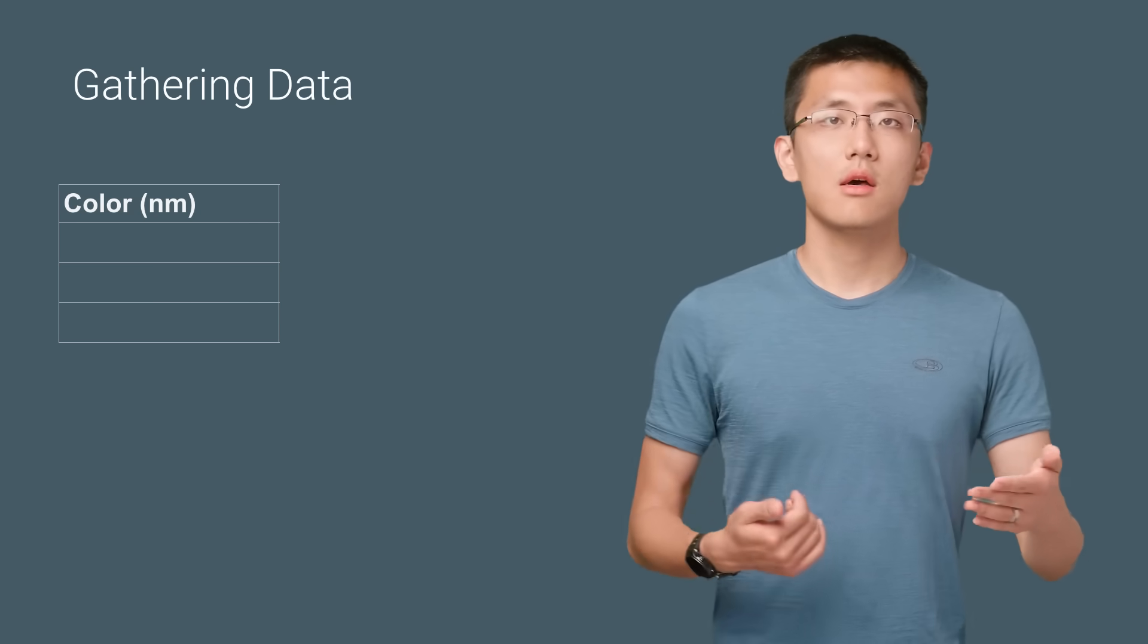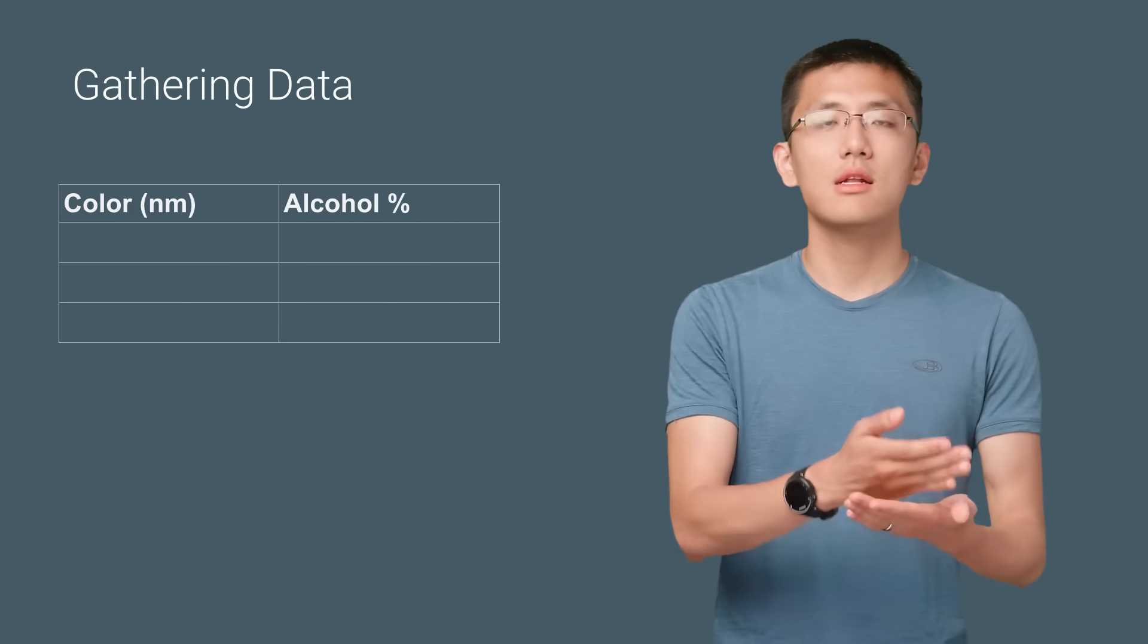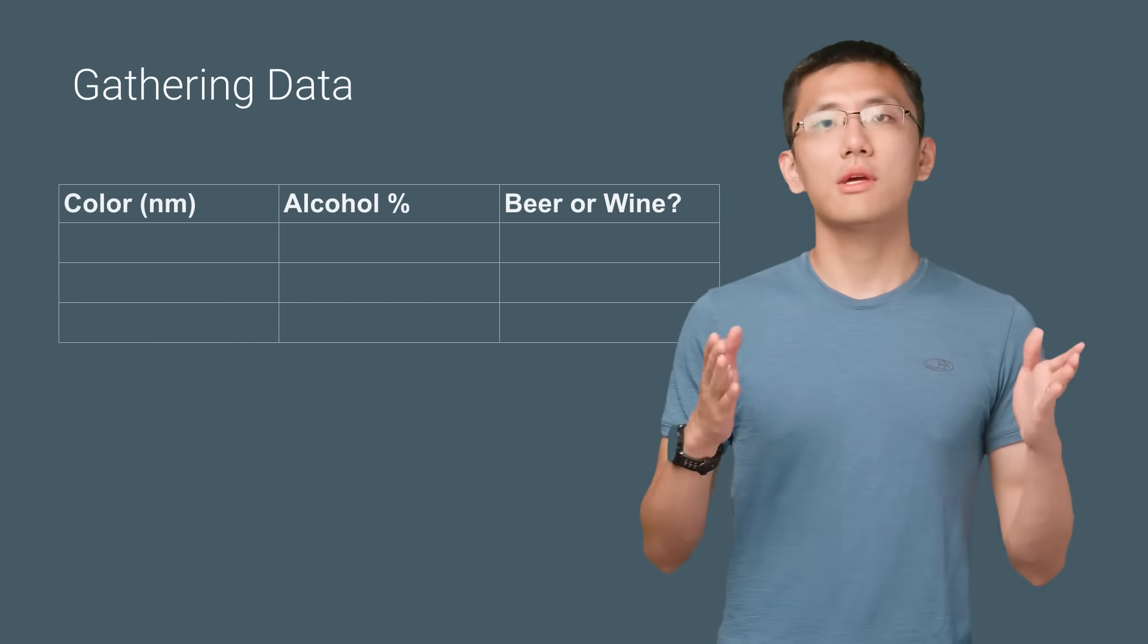This will yield us a table of color, alcohol content, and whether it's beer or wine. This will be our training data.